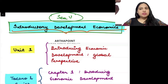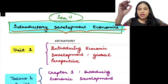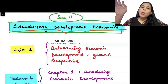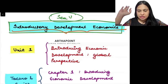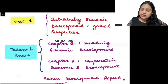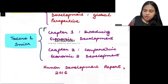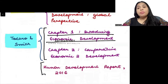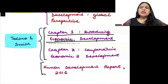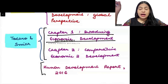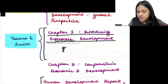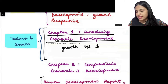There are three units in this subject. The first unit is going to tell you about economic development — what is economic development? In this unit, we have three readings that I will be covering with you. The first reading we will start with is Chapter One: Introducing Economic Development. We will discuss what economic development is. Many people want to understand the difference between growth and development.